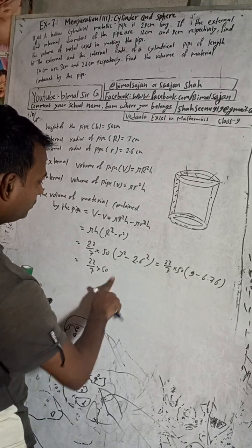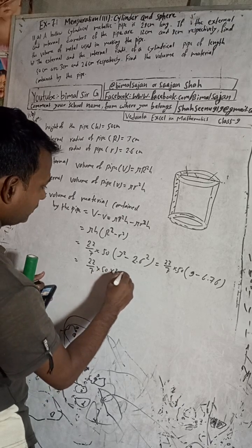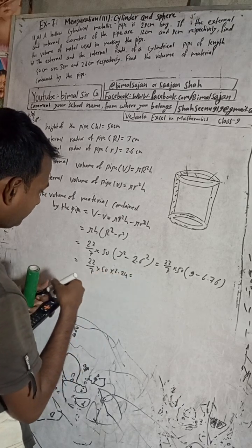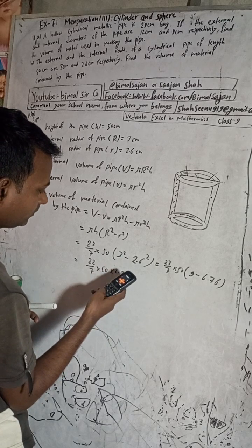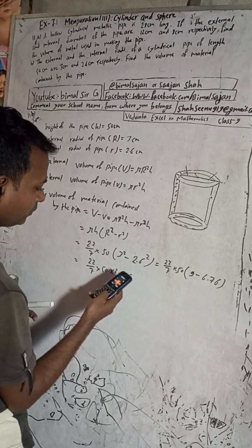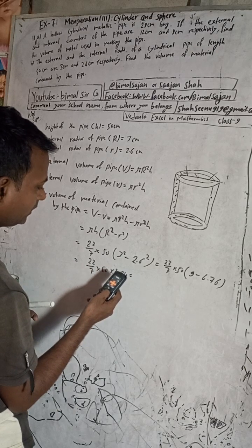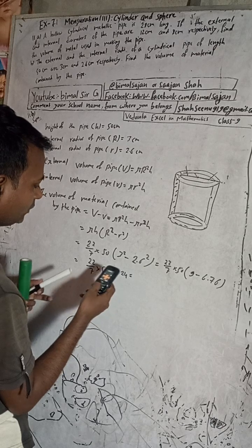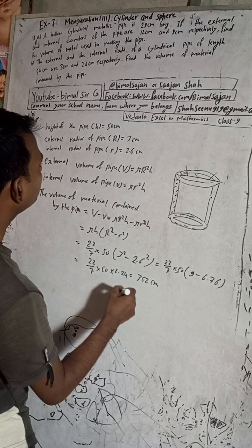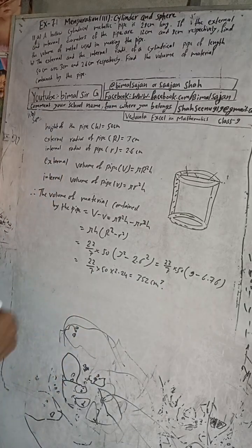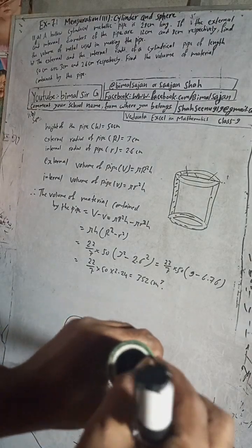So this is 22 by 7 into 50 into 2.24. Computing: 50 times 2.24 times 22 divided by 7 gives 352. So the volume of material contained in the pipe is 352 cm cubed. That is the material of this outer cylindrical pipe.